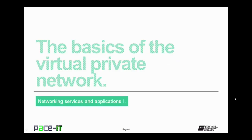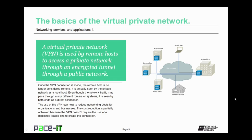A virtual private network, or VPN, is used by remote hosts to access a private network through an encrypted tunnel through a public network. Once the VPN connection is made, the remote host is no longer considered remote — it's actually seen by the private network as being a local host. There are many advantages to that.